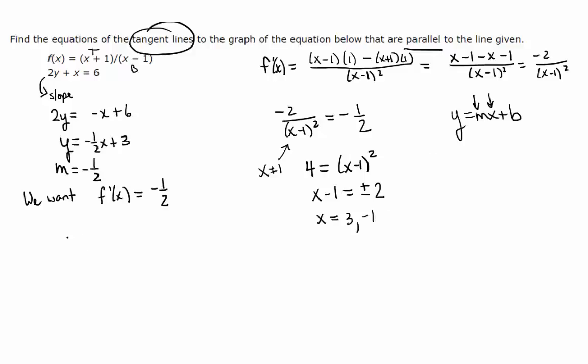So we have two different x values. When x is 3, y is f of 3, which in this case is 3 plus 1 over 3 minus 1. That's 4 over 2 or 2. This tells you that the function, the original function, and its tangent line at that point go through the point x is 3 and y is 2.